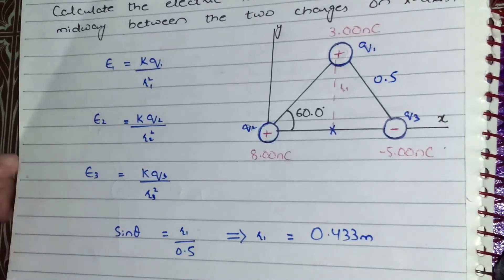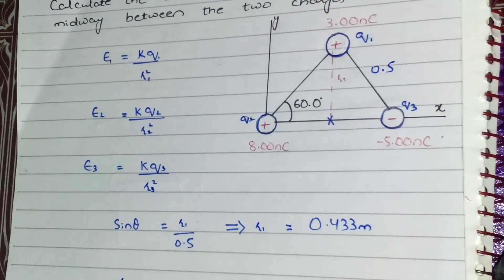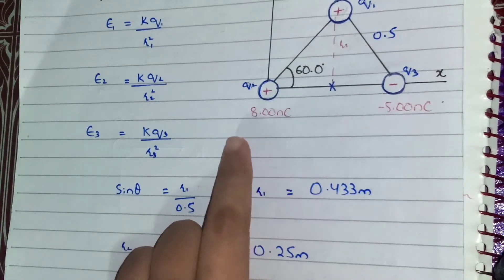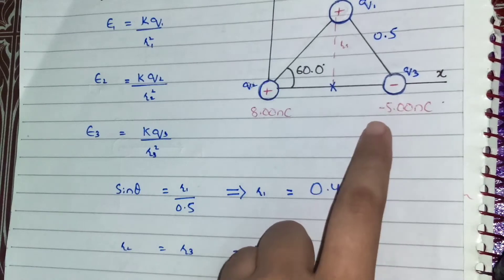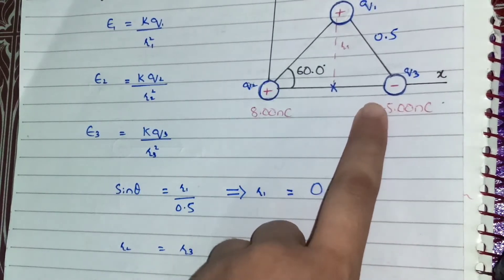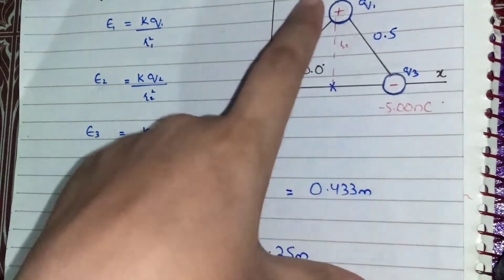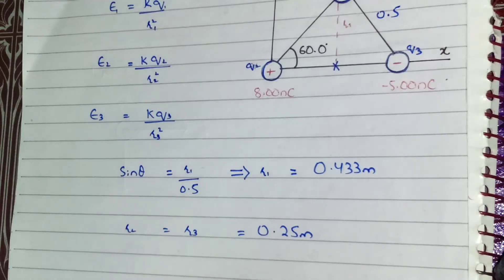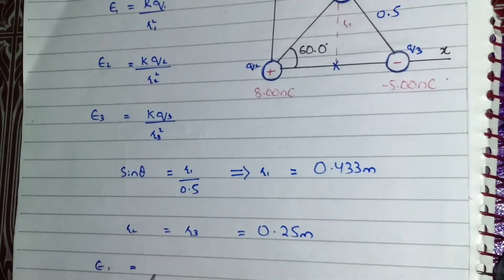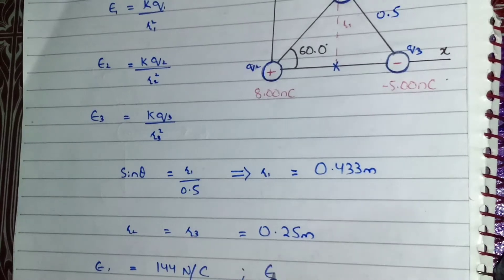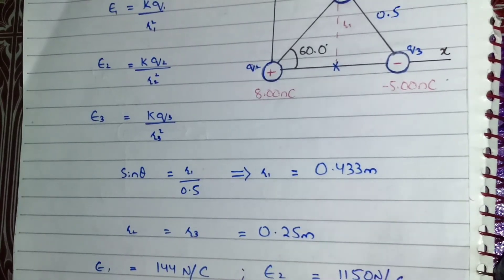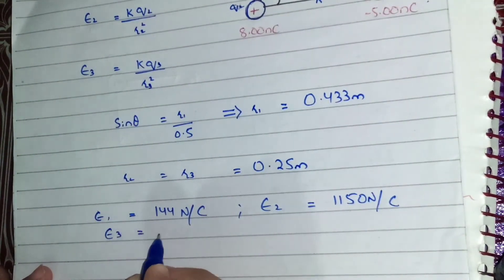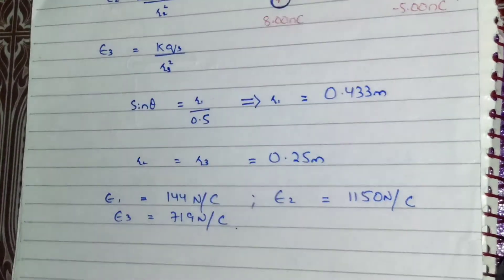Now we have all the values required to solve E1, E2, and E3. Substitute the values in standard units: 8×10⁻⁹ C, 5×10⁻⁹ C, 3×10⁻⁹ C — focus on the magnitude. Using k = 8.9×10⁹, substituting all values gives E1 = 144 N/C and E2 = 1150 N/C.